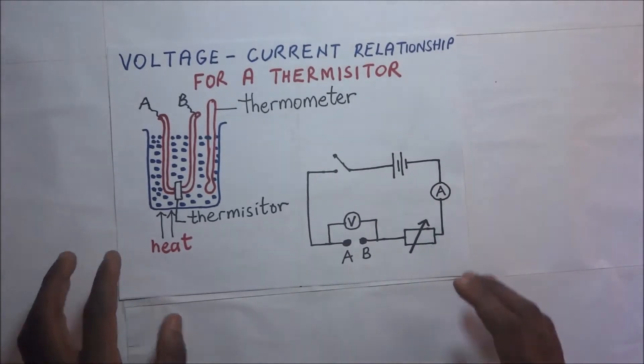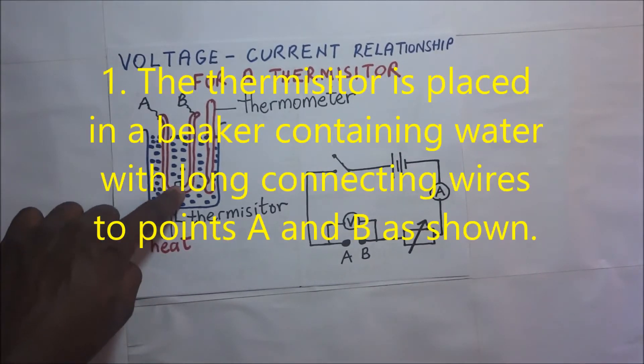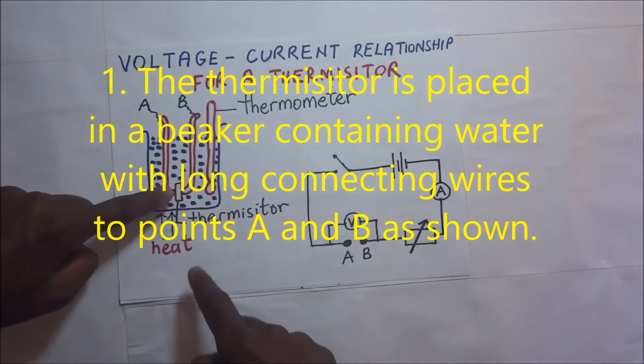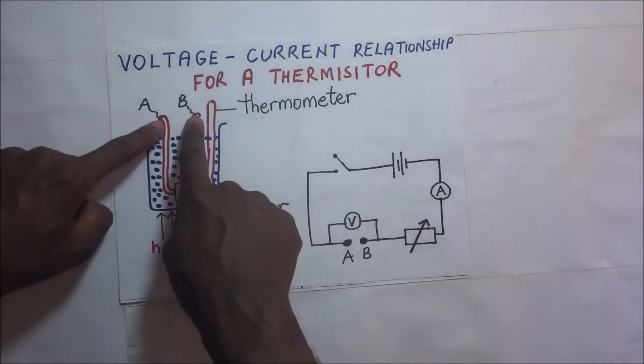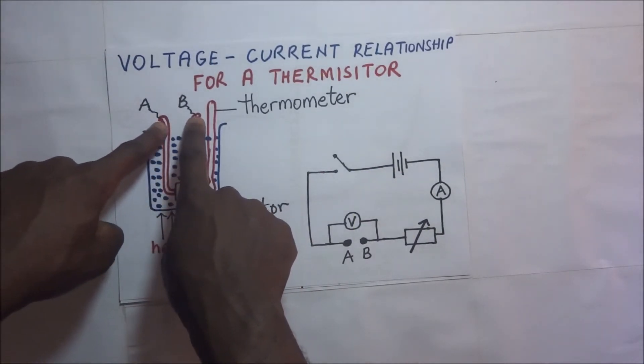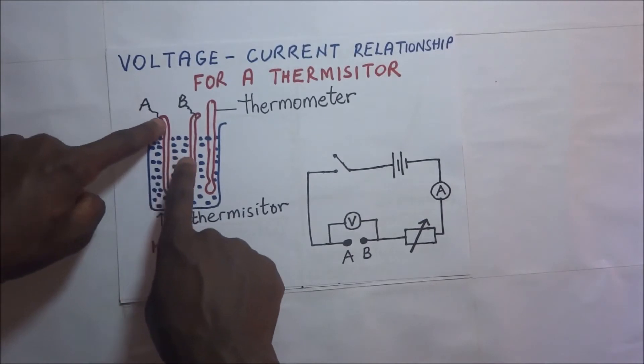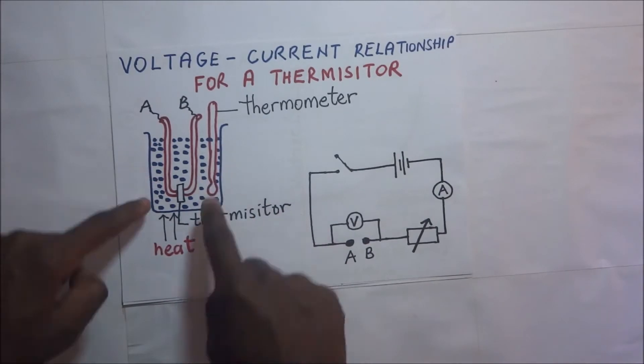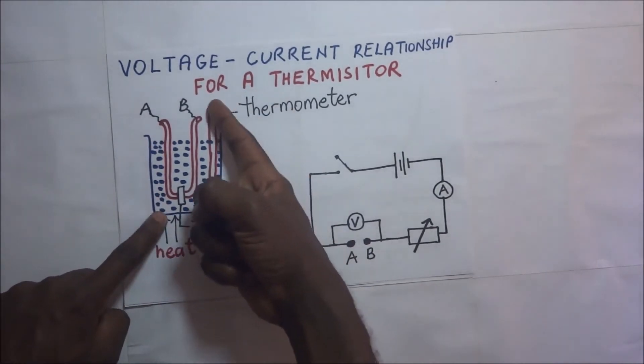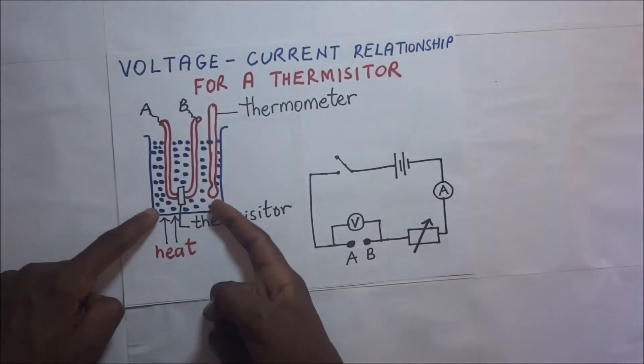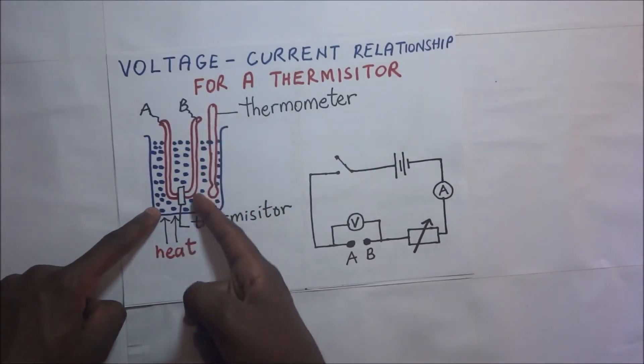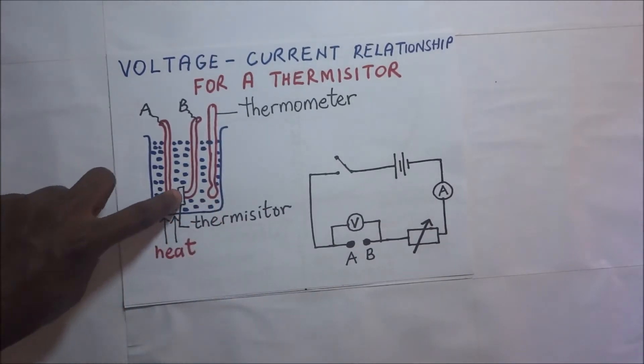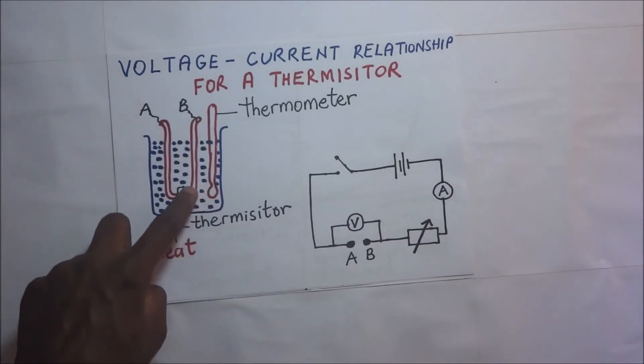Right before us, we have the setup of this experiment. We have the thermistor right there, being held by two metallic tongs in between. These two metallic tongs are connected to terminals A and B. Here we have a beaker with water in it. This water will be heated. As we are heating this water, we have a thermometer that is meant to gradually detect the temperature of this water. In essence, here we are trying to heat this thermistor as we monitor the temperature of this surrounding water.